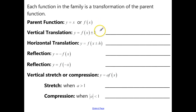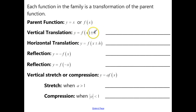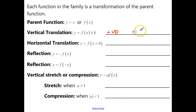Let's talk about the different components. A vertical translation — moving it up or down — you're going to find that outside of the function. If you see a number outside of the function, generally to the right: if it's a positive number we're going to shift it up, and if it's a negative number we're going to shift it down.